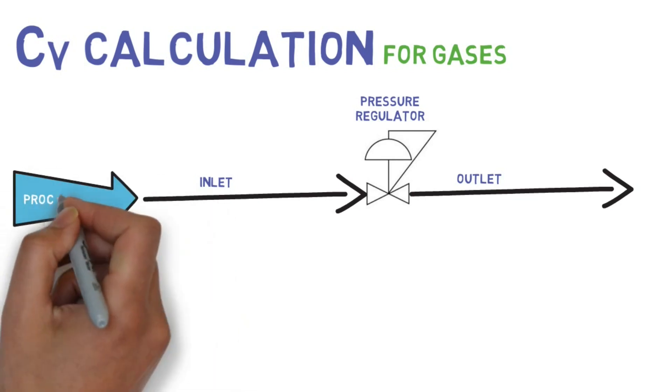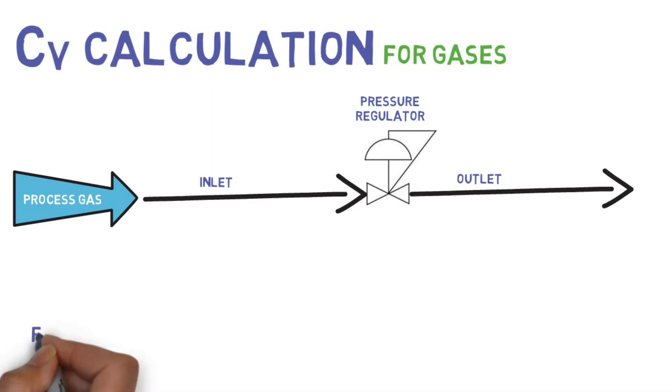Process gas flowing through pressure regulator. Formula for flow coefficient of gases will be: